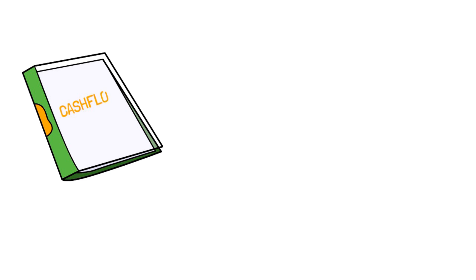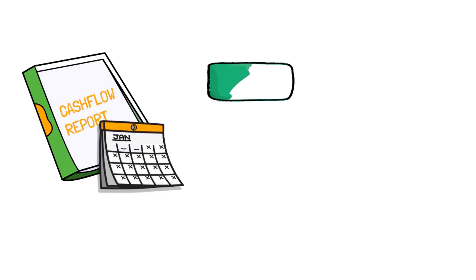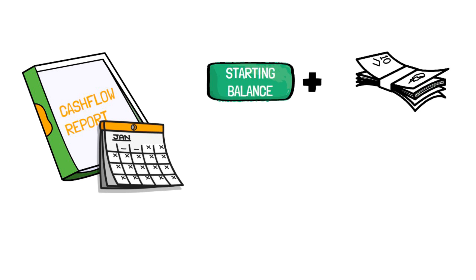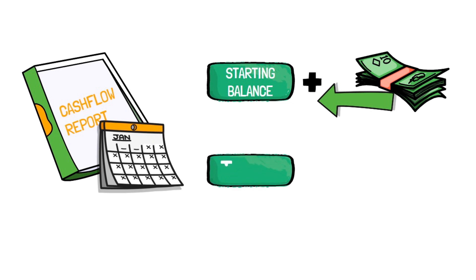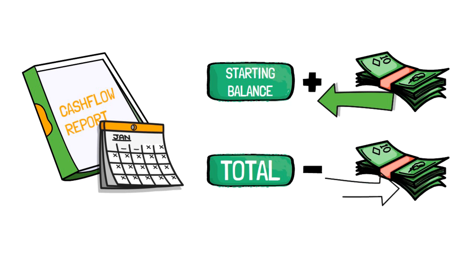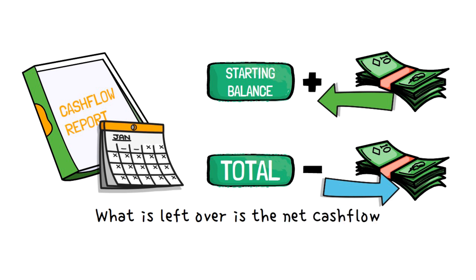For a given period for which we want to report the cash flow, we'll typically start with the beginning balance for that period, and then add to it all the cash flowing into the business from various sources. Next, we subtract from this total all the cash flowing out of the business, and what is left over is the net cash flow for that period of time.